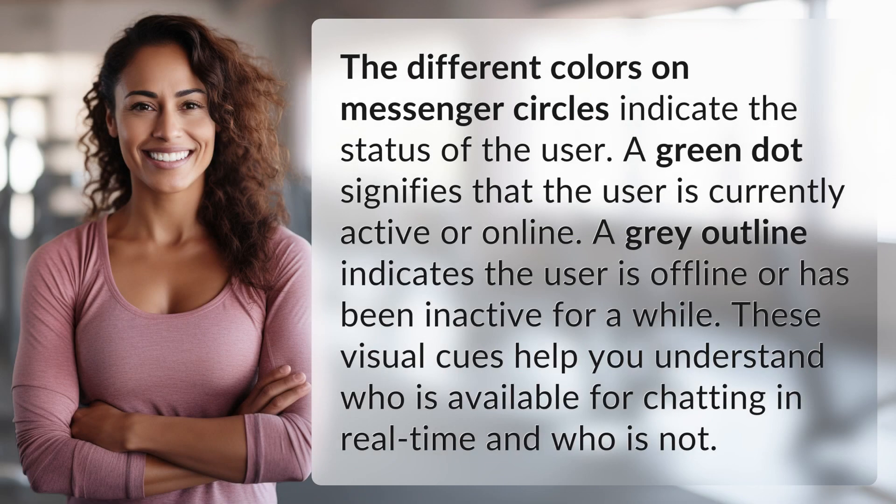The different colors on Messenger circles indicate the status of the user. A green dot signifies that the user is currently active or online. A gray outline indicates the user is offline or has been inactive for a while. These visual cues help you understand who is available for chatting in real time and who is not.